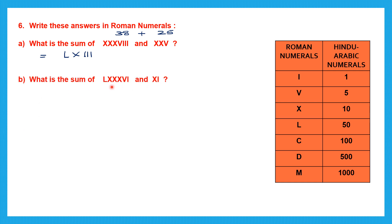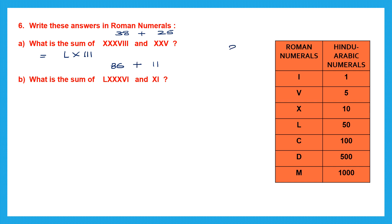Next: LXXXVI is 50 plus 30 plus 6 equals 86, and XI is 10 plus 1 equals 11. Sum of 86 plus 11 is 97. We write 97 as 90 plus 7 — XC for 90 (100 minus 10) and VII for 7 — giving XCVII.